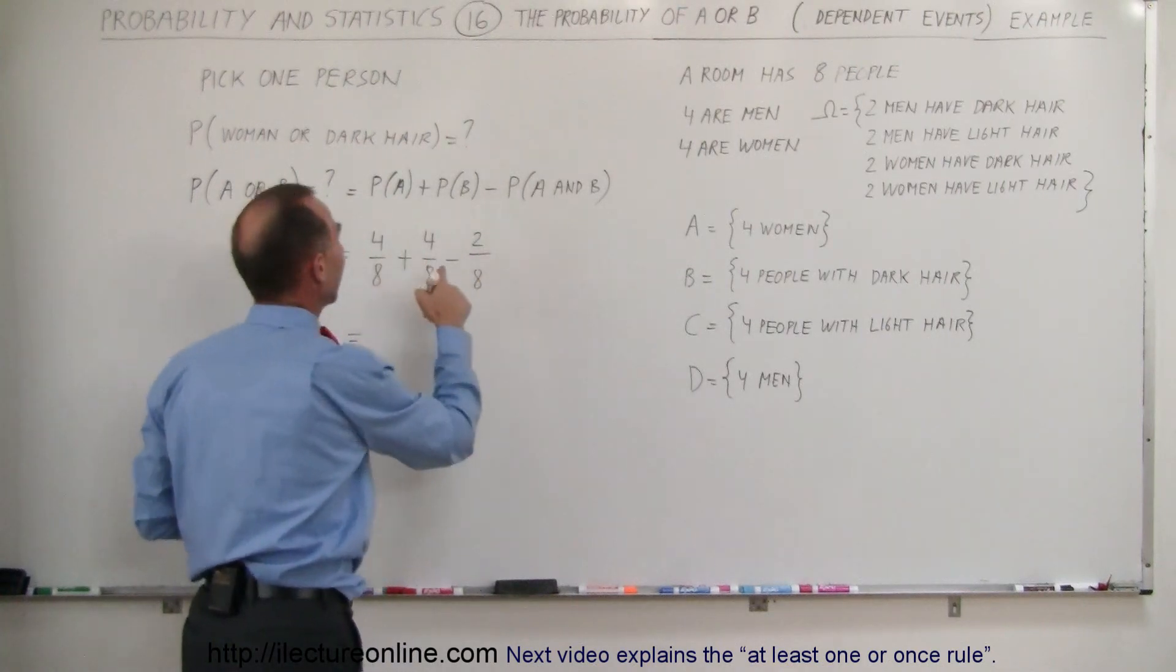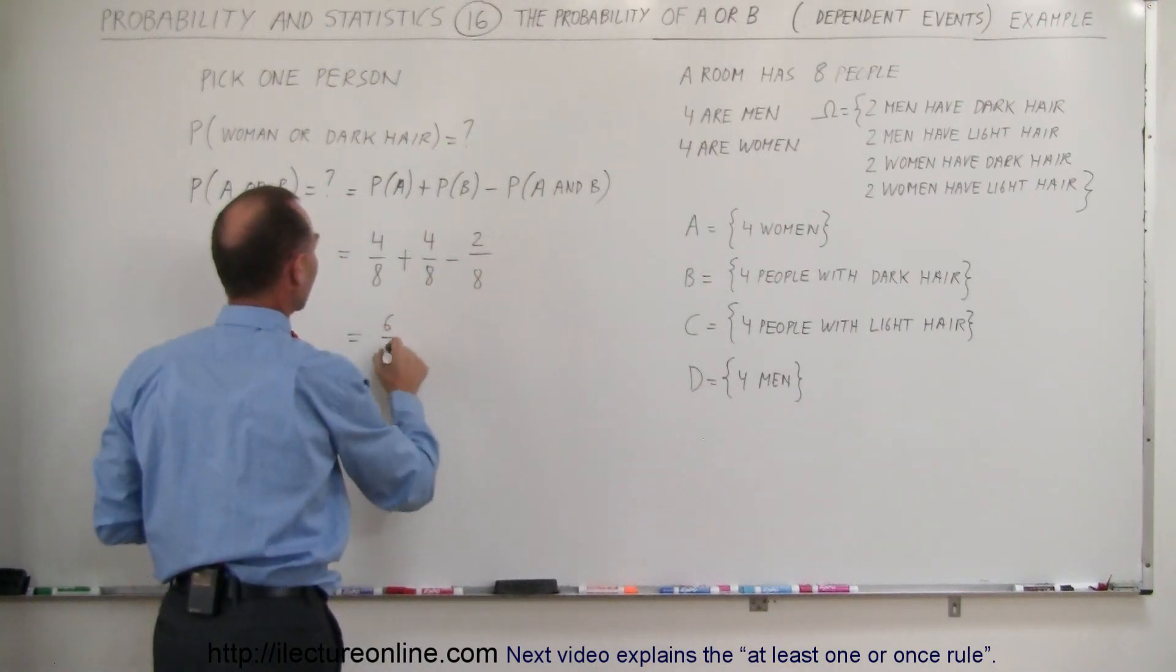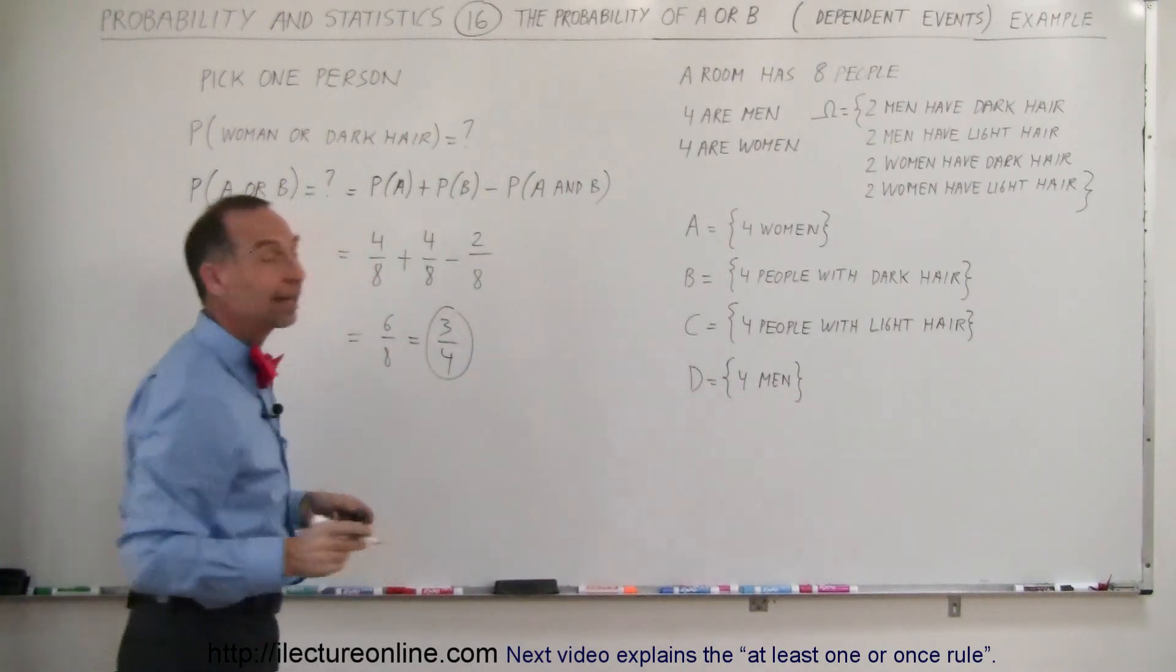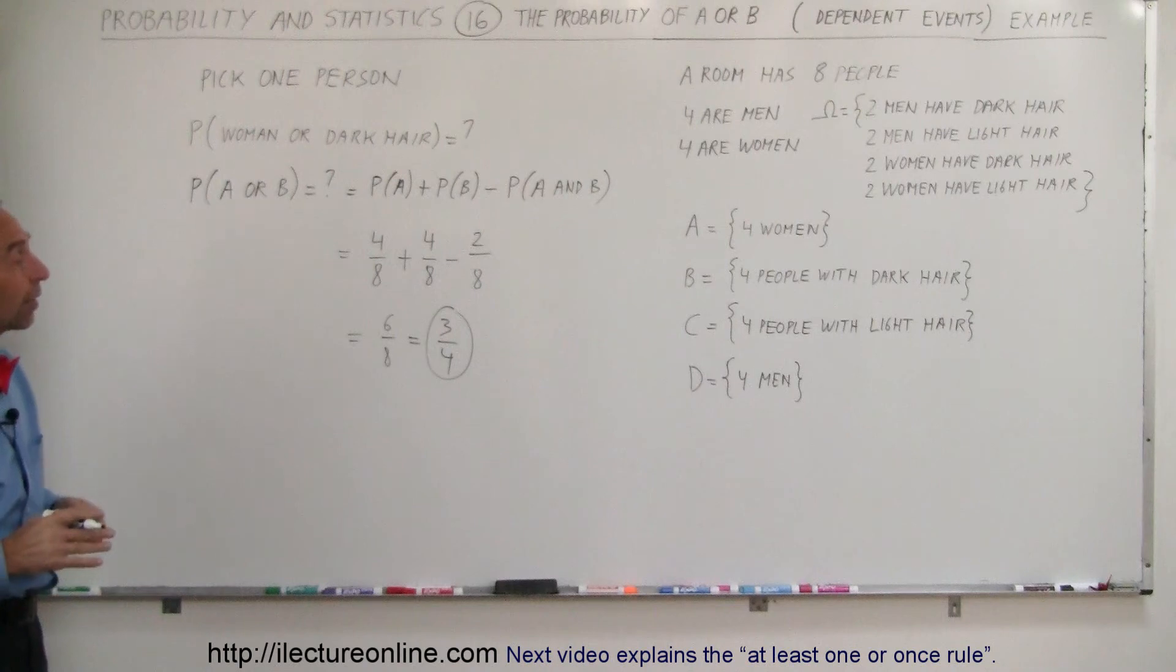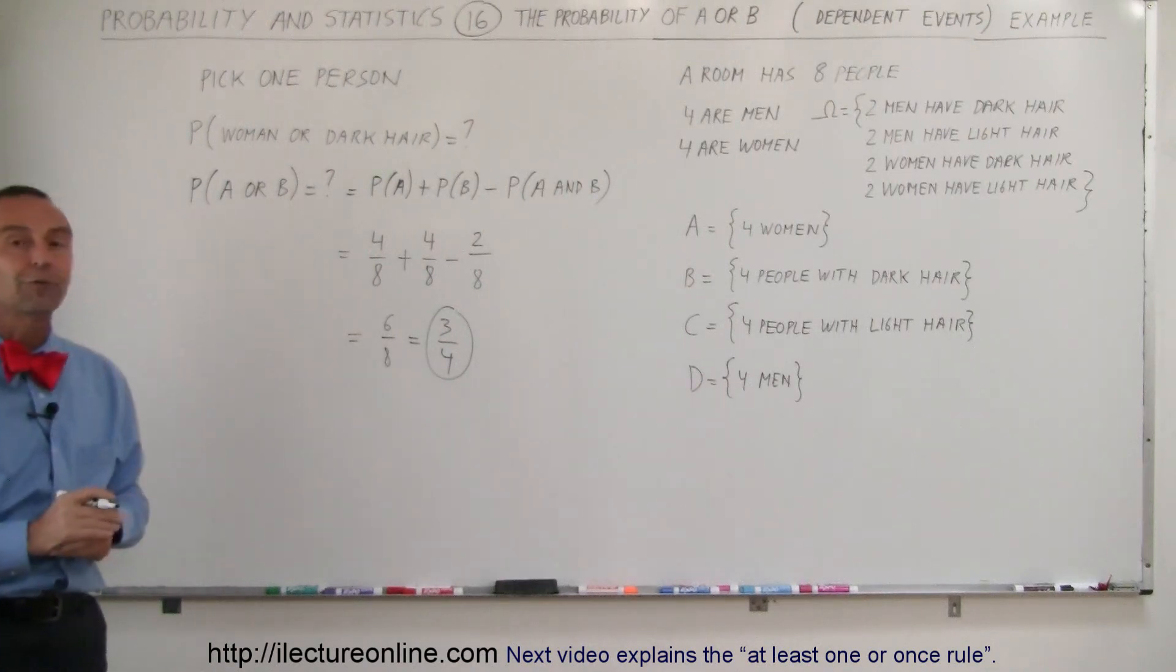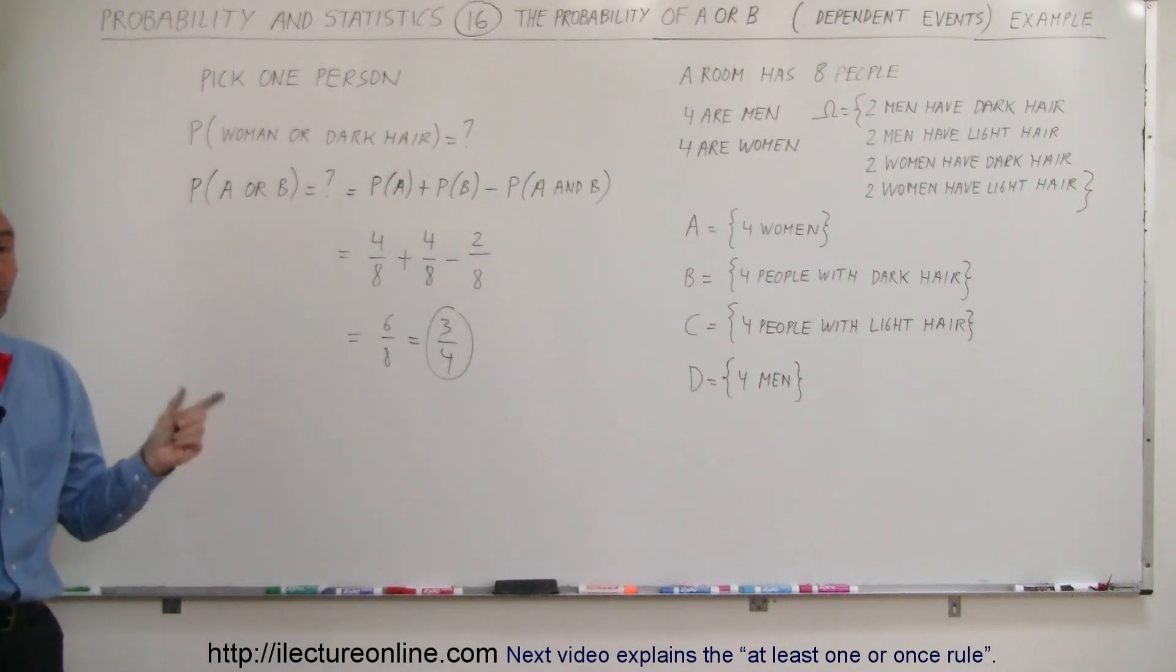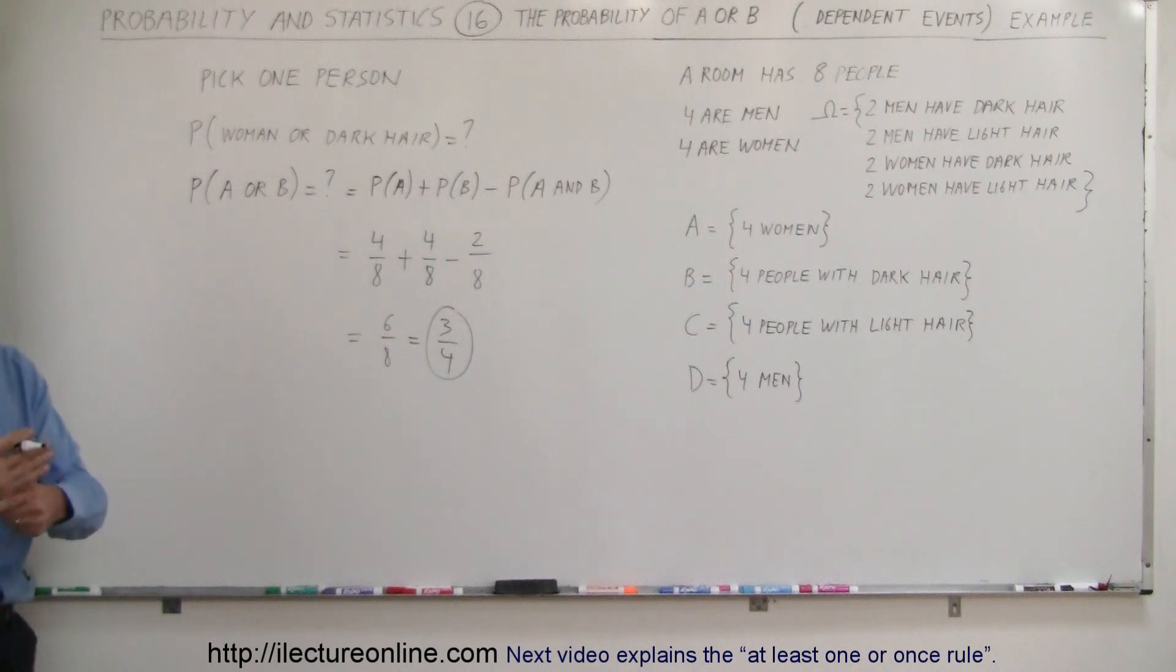So this is equal to eight minus two, or six out of eight, which is equal to three out of four. So the probability that it's a woman or a person with dark hair would be three out of four. And that's how we find the probability in the case where the outcomes are dependent on one another or have overlap.